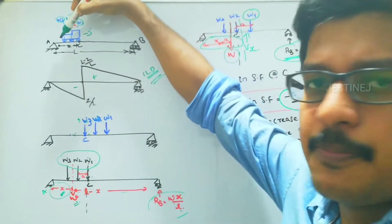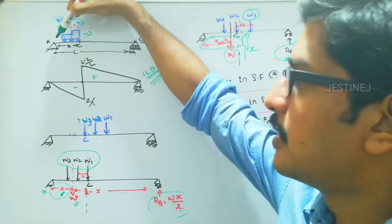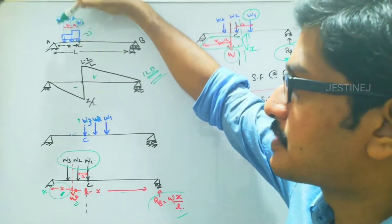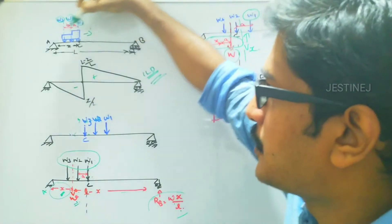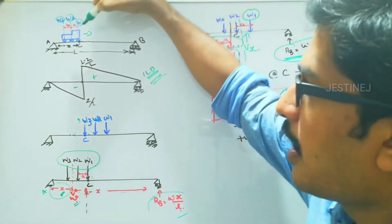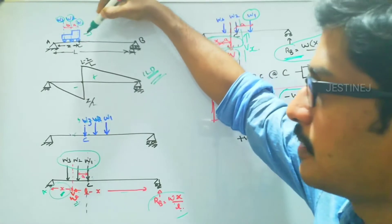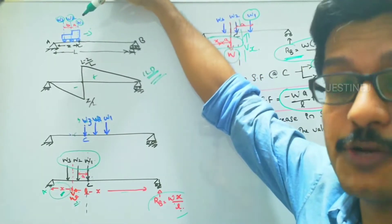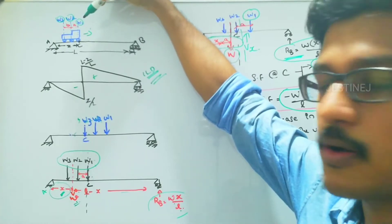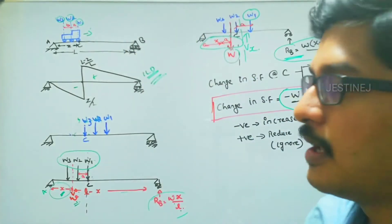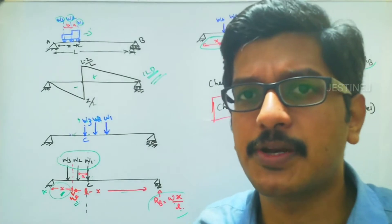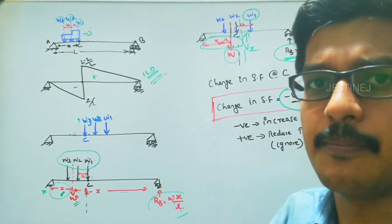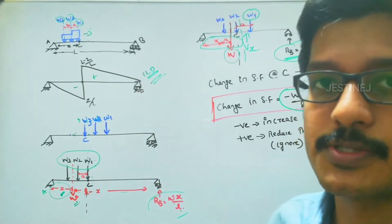A simply supported beam with supports A and B and a train of concentrated loads traveling from point A to point B. At a point in this beam, let us assume the point C, what is the maximum shear force or what is the condition for maximum shear force occurring at point C? A series of loads is passing over a beam, that is called a train of concentrated loads.